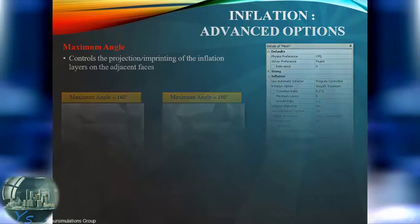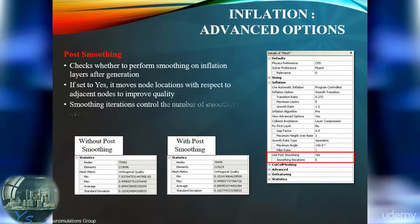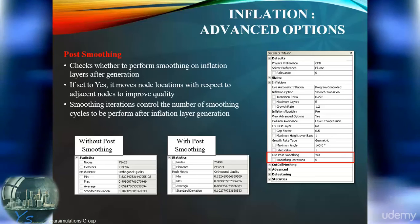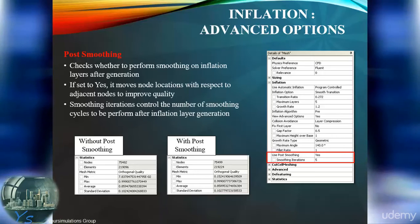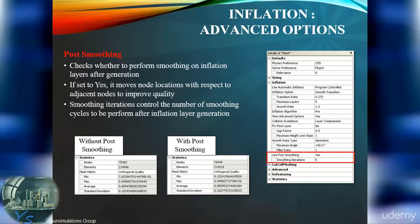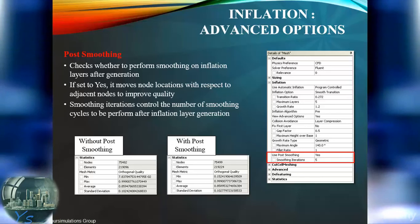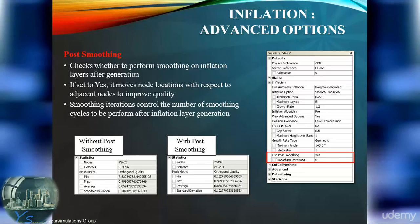The last option allows us to improve element quality by smoothing the inflation layers. Similar to global smoothing, this can be quite time consuming, but it can be the difference between a good and an unacceptable mesh quality.